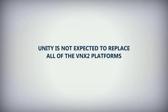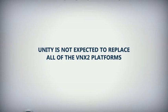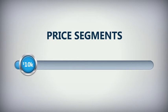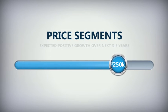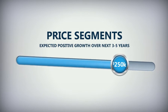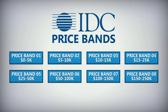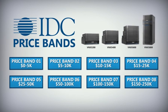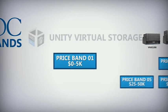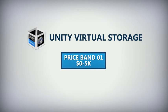Unity is not expected to replace all of the VNX2 platforms. Rather, it was designed to address price segments ranging from just under $10,000 to $250,000, where EMC expects positive growth over the next three to five years. More specifically, Unity addresses the opportunity gap in IDC price bands one through eight — $10,000 to $250,000 — where older VNX technology such as the VNX5200 through VNX5800 systems have resided for the past four years. The virtual editions of Unity are expected to cover the opportunity gap mainly within IDC price band one, where customer spend is up to $5,000.